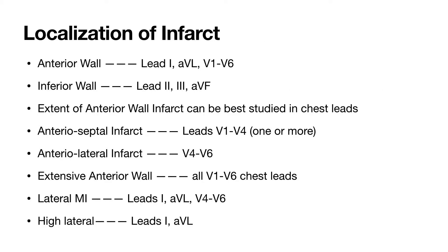To localize the infarct, ECG changes are best seen in leads facing the ischemic or infarcted area. Leads I, aVL, and chest leads V1 to V6 face the anterior wall, showing classical changes in anterior wall infarction. Leads II, III, and aVF face the inferior wall, showing classical changes in inferior wall infarction. Reciprocally, in anterior wall infarction, leads II, III, and aVF show ST depression and tall upright T waves, and in inferior wall infarction, leads I, aVL, and V1 to V6 show reciprocal changes.